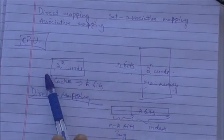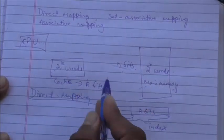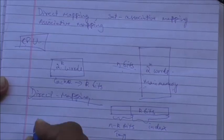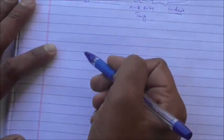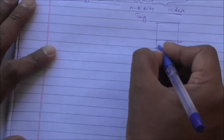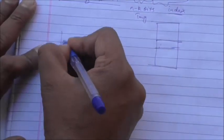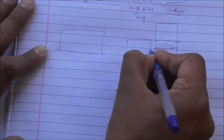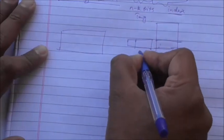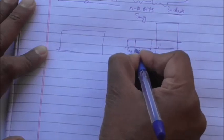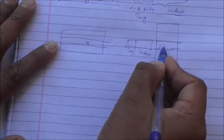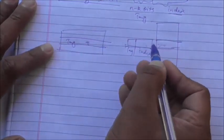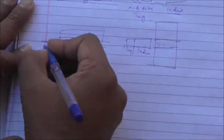We will consider a block size of one word for this example. When a word in main memory is to be transferred to cache memory, its main memory address is divided into index and tag parts. When the data item is transferred into cache, along with that data item its tag is also stored, and it is stored at the address in cache which is the same as its index.